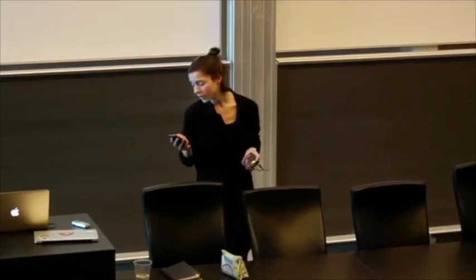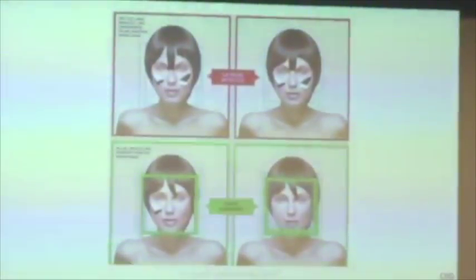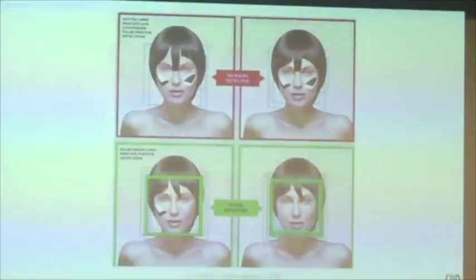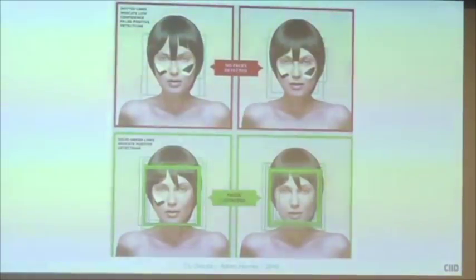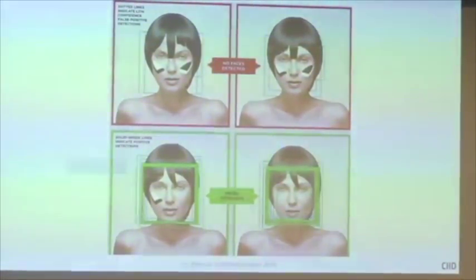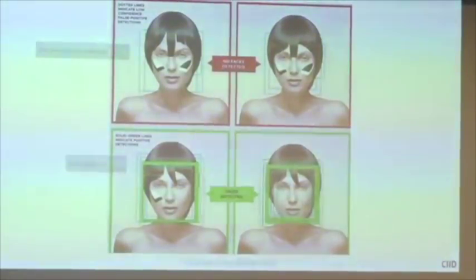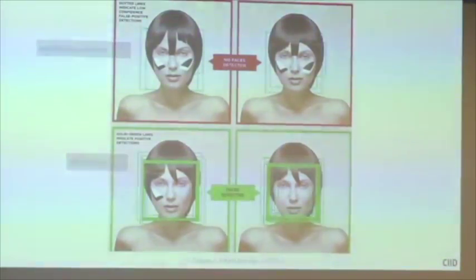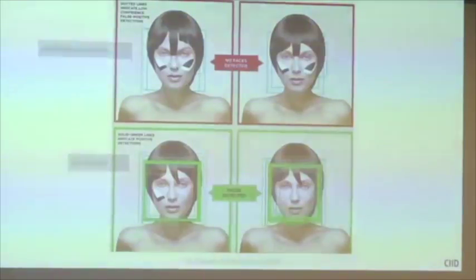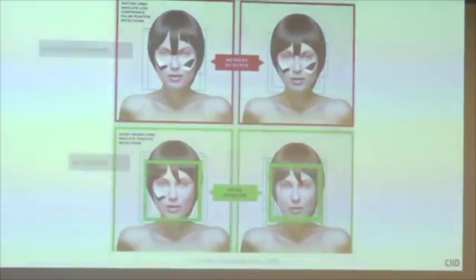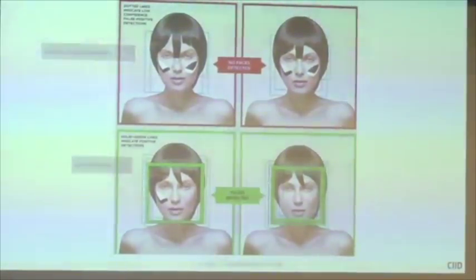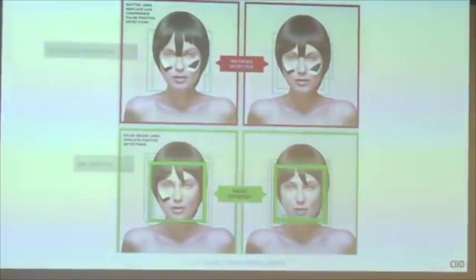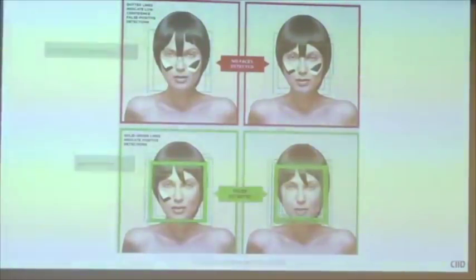Another project by Adam Harvey from 2010 is called CV Dazzle — a type of camouflage from computer vision. It uses makeup to create bold patterning on your face that breaks apart features expected by computer vision algorithms. To me, this begs the question: what does it mean if we have to engage in self-defense against the devices we ourselves are creating? And what does information asymmetry mean for our daily lives — the grocery stores we're passing through, for example?